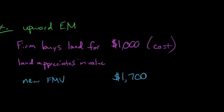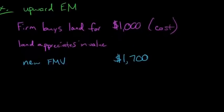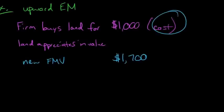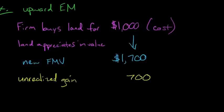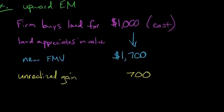But the firm hasn't sold the land yet. Because the land is recorded at historical cost, this gain is not recorded until you actually sell the land. What we have here is an unrealized gain. Unrealized means it's realized when we sell the land and actually get the money. We have an unrealized gain of $700 here. How can this lead to earnings management?